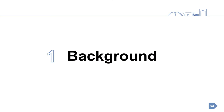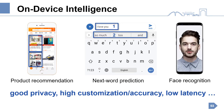I first introduce some background. Nowadays, more and more machine learning tasks are offloaded from the cloud to mobile devices, such as product recommendation, next word prediction, and page regulation. The motivations behind this trend include good privacy, high customization and accuracy, as well as low latency.